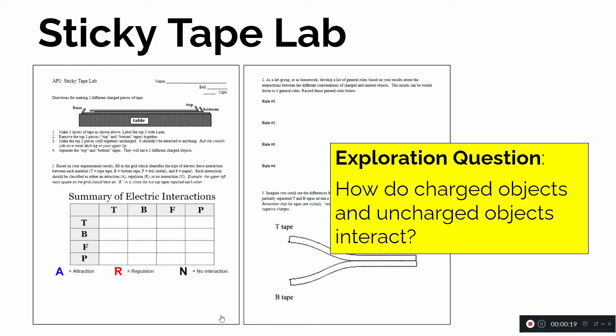In our sticky tape lab, you looked at the exploration question: how do charged objects and uncharged objects interact? For that, you had two different types of charged sticky tape, some aluminum foil, and some paper. You basically got a list or a table of all the different types of electric interactions or non-interactions between each of those pairs.